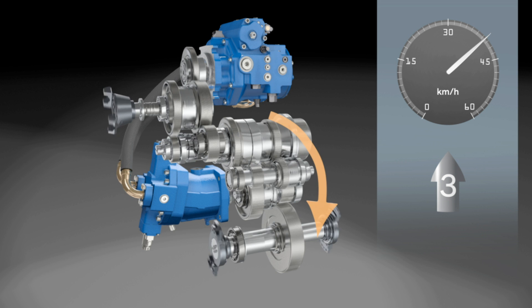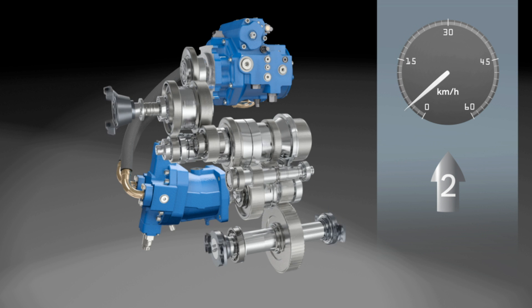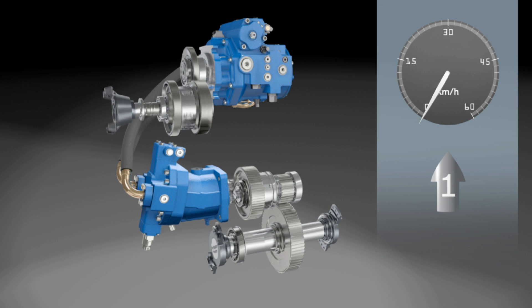The change of direction takes place hydrostatically. This makes wear-free reversing possible. The HVT gearbox is symmetrically designed for traveling forwards and backwards. This results in the same functionality in all three driving modes when traveling backwards.